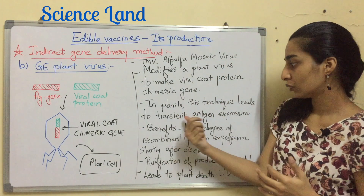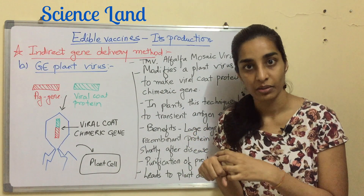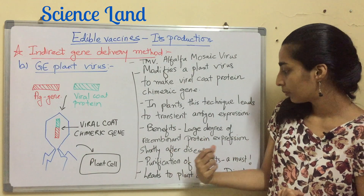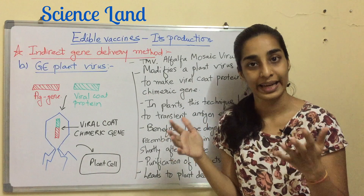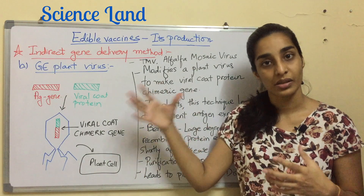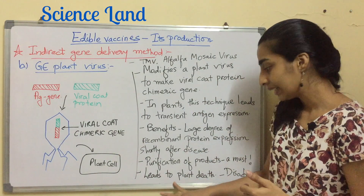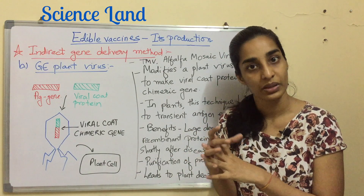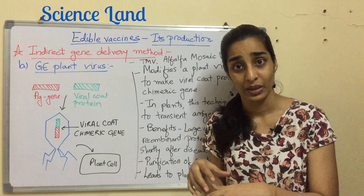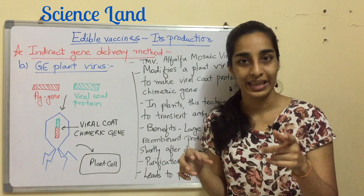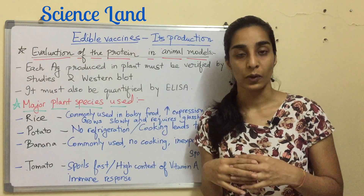In plants, this technique leads to transient antigen expression — it is not integrated into the genome because the virus is only infecting the plant. The benefits include a large degree of recombinant protein expression shortly after infection. However, further purification of the product is mandatory before use for vaccination. The key disadvantage is that it leads to plant death — the infected plant eventually dies, requiring reinfection of another plant.